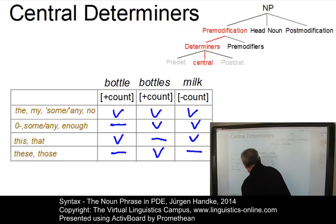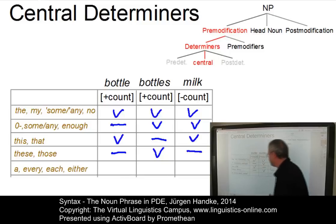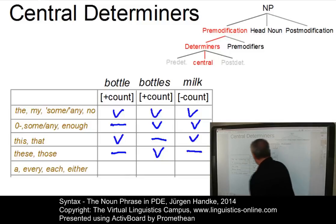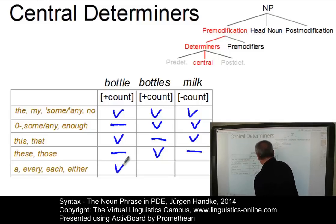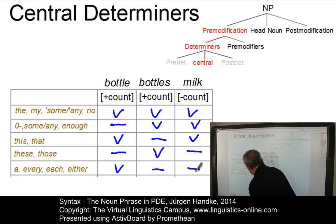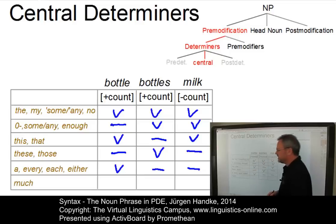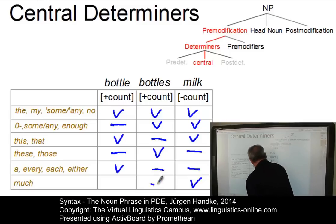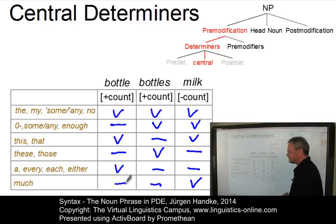Then we have elements such as the indefinite determiner 'a', and then 'every', 'each', and 'either', where 'every bottle' is possible but 'every bottles' and 'every milk' are out. And finally, we have an element such as 'much', which is a typical central determiner associated with non-count nouns but not with count nouns.